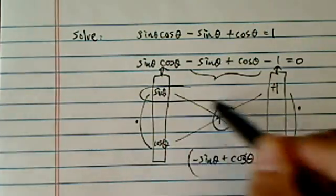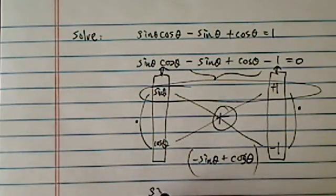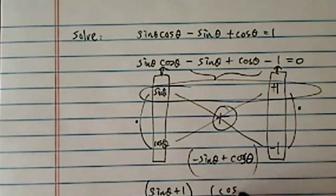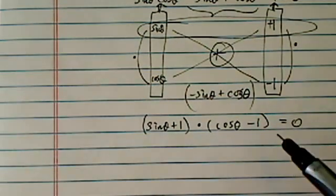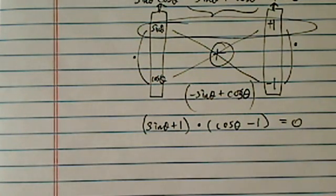Okay, so my answer is going to be read as sine theta plus one times cosine theta minus one is equal to zero. Look at that. Isn't that much more simple than we thought? At least a lot more simpler than I thought.